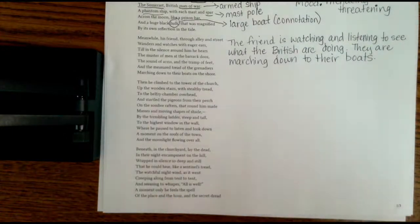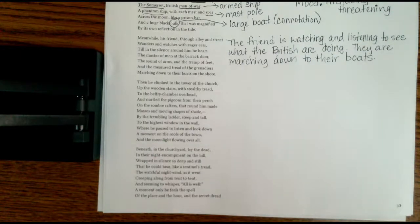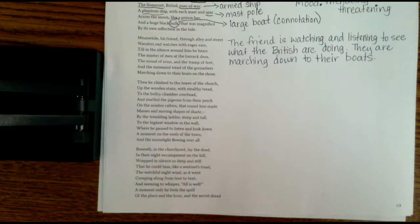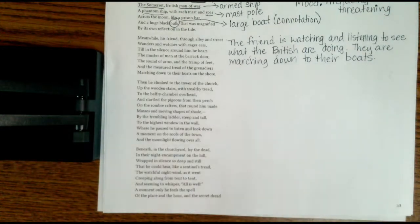Then he climbed to the tower of the church, and this is still the friend, okay, because Paul Revere is on the other side on the Charleston shore. Then he climbed to the tower of the church, up the wooden stairs with stealthy tread, to the belfry chamber overhead, and startled the pigeons from their perch on the somber rafters that round him made masses and moving shapes of shade. By the trembling ladder, steep and tall, to the highest window in the wall, where he paused to listen and looked down, a moment on the roofs of the town, and the moonlight flowing over all.